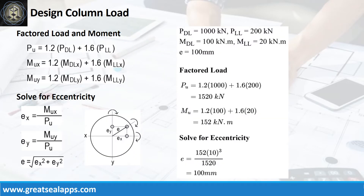Given an axial dead load of 1000 kN and axial live load of 200 kN, the factored axial load is 1520 kN. Given a moment dead load of 100 kNm and moment live load of 20 kNm, the factored moment is 152 kNm, for an eccentricity of 100 mm.